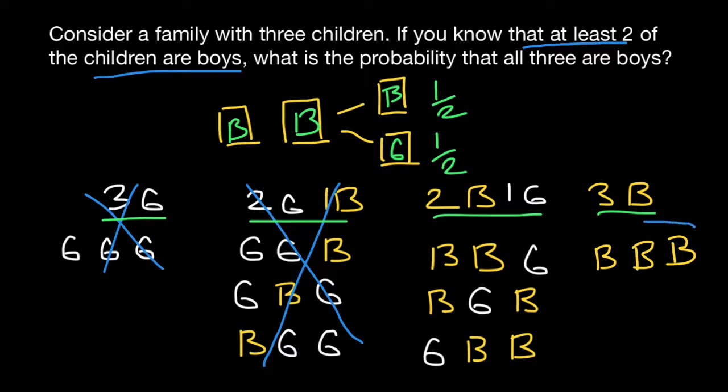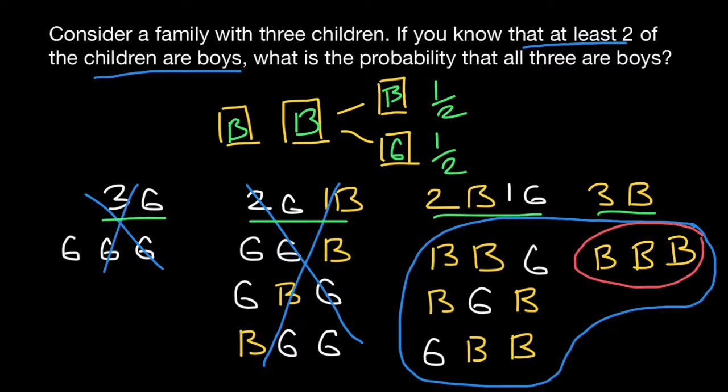And now we have to choose among this sample space. And we have four combinations here. And the probability for a family to have all three children boys would be one out of four, and not one half.